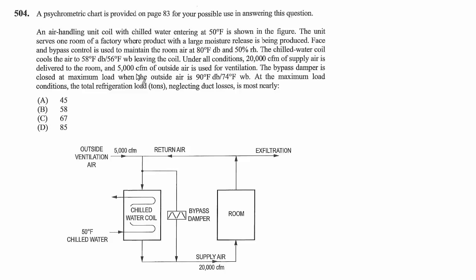Problem 504: A psychrometric chart is provided on page 83 for your possible use in answering this question. An air handling unit coil with chilled water entering at 50°F is shown in the figure. The unit serves one room of a factory where product with large moisture release is being produced. Face and bypass control is used to maintain the room air.